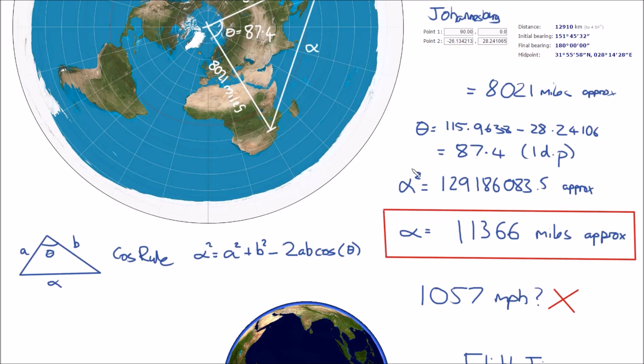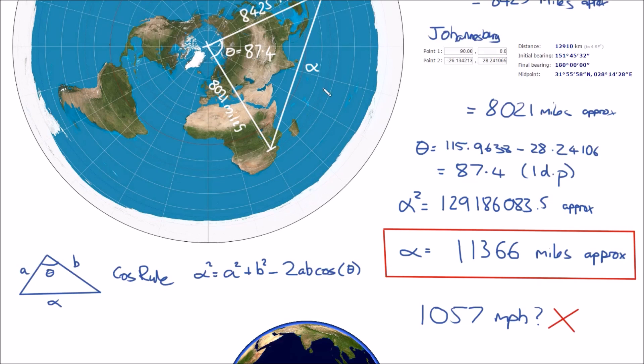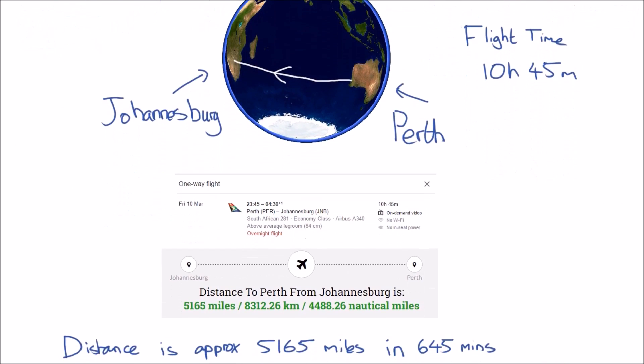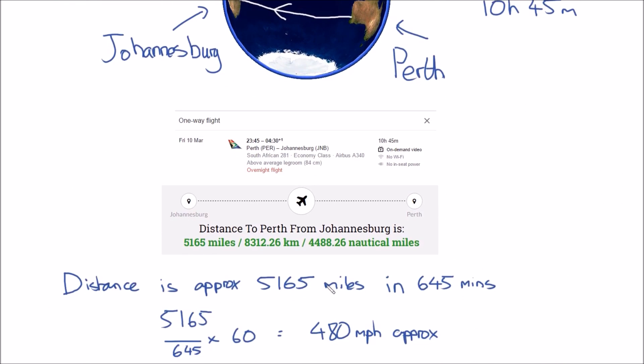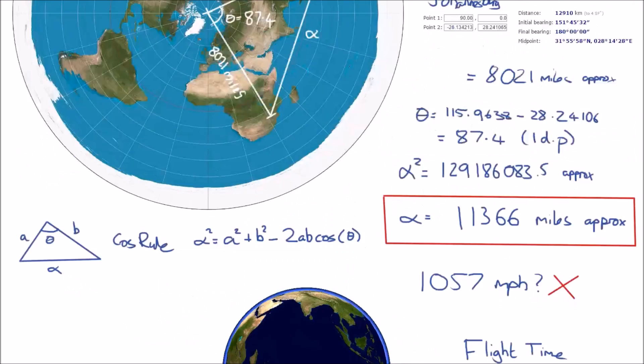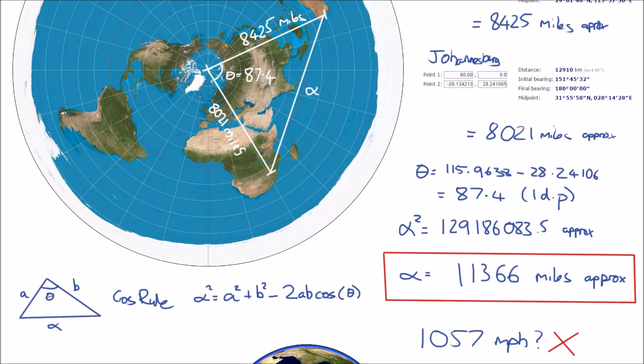And if we square root both sides, we get 11,366 miles. So we're saying alpha here is approximately 11,000 miles, and this of course is a complete contradiction because we know the distance is less than half—it's about 5,100 miles. It's a complete contradiction.